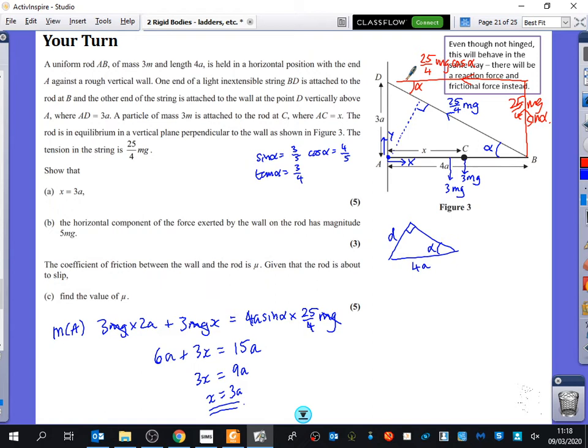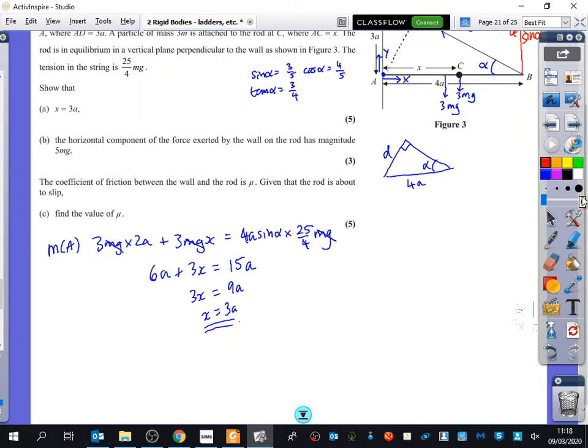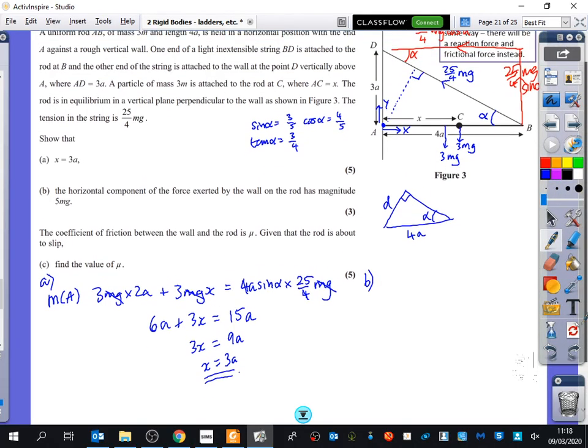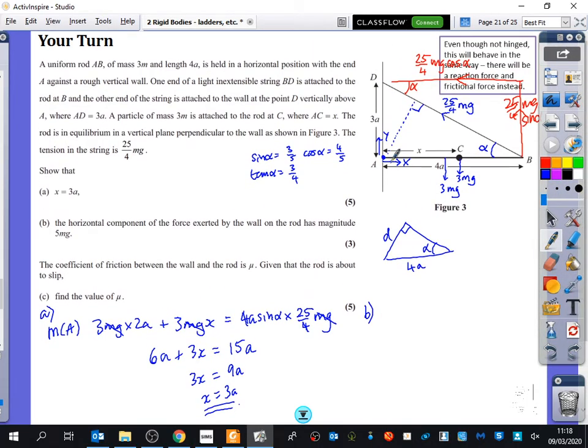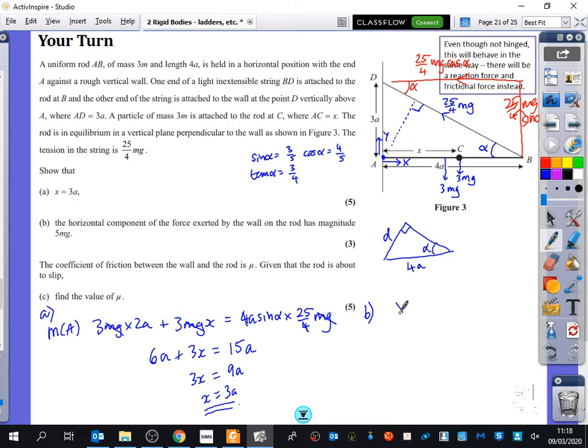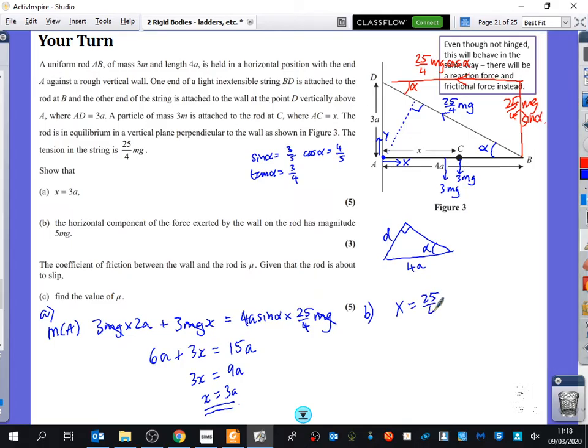It then says show that the horizontal component of the force exerted by the wall has magnitude 5MG. So this is actually the normal reaction, but we're going to do that using resolving forces. This was part A. Which of the forces am I trying to find, X or Y? X. I'm trying to find what X is. It looks like X equals the tension resolved in this direction, which is 25 over 4MG cos alpha. And cos alpha is 4 over 5, so X equals 5MG.